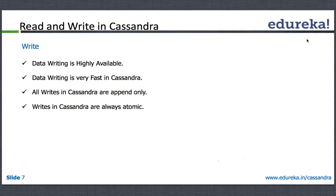Let's look at reads and writes in Cassandra. Writes in Cassandra are highly available — Cassandra is more tuned for availability rather than consistency. You can scale writes really well; it's very fast. You can scale up to one billion transactions per second. All writes in Cassandra are append-only, logged into the commit log, then into mem tables, and finally landing into SS tables.